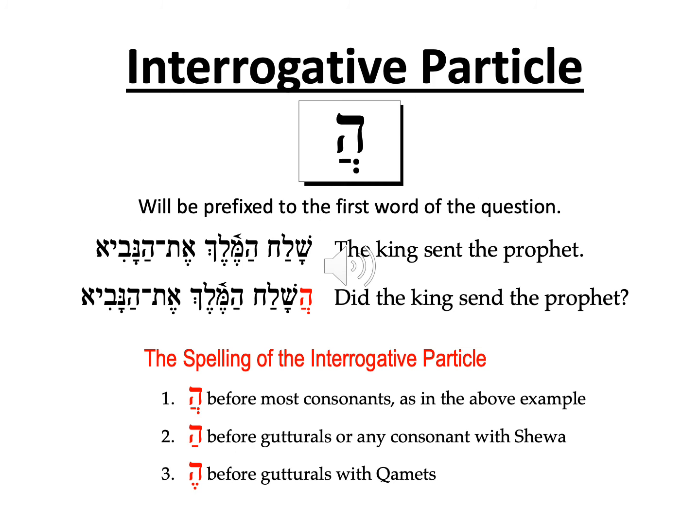The interrogative particle is basically the Hebrew question mark, only it comes at the beginning of the question — sort of like the upside-down question mark in Spanish that comes at the beginning of the sentence. However, in Hebrew the question marker may not come at the beginning of the sentence, but will be at the beginning of the question, which may be in the middle of the sentence. Again, context will tell you if you have a question. Vowels change slightly, but most of the time it will be he with a patah shva. The shva drops before gutturals, just leaving he patah or he segol.